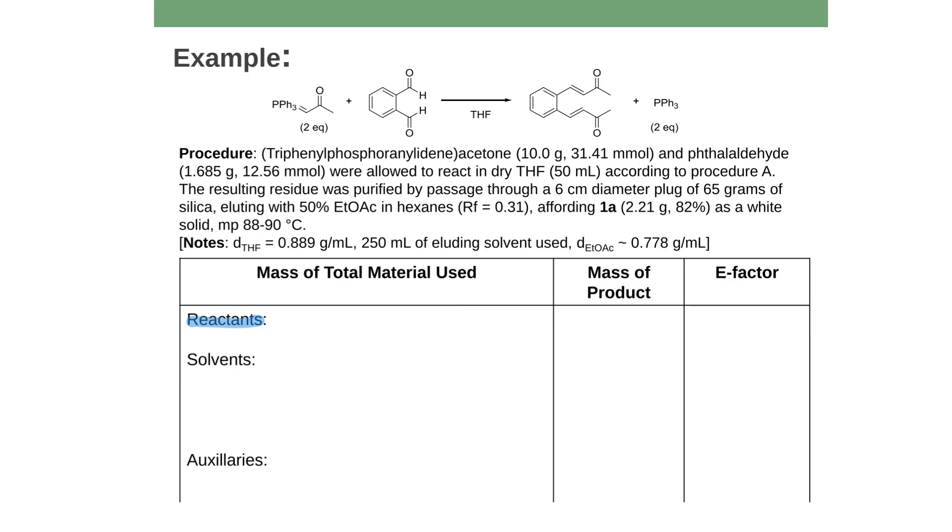So let's look at this here. So my reactants, what were my reactants? These were my reactants. I had 10 grams of this stuff, and I had what looks like 1.685 grams of that. So that would be under my reactants. So I'm going to have 10.0 grams and 1.685 grams.